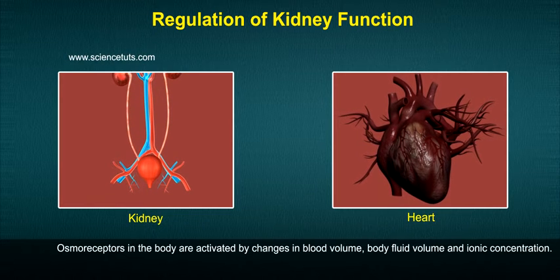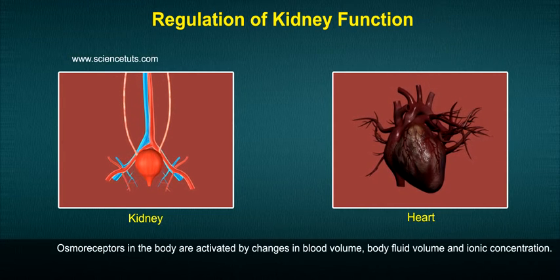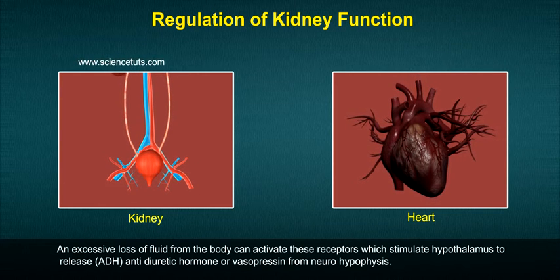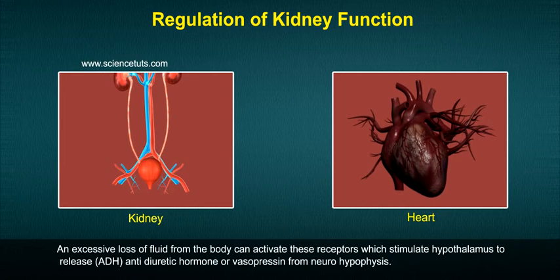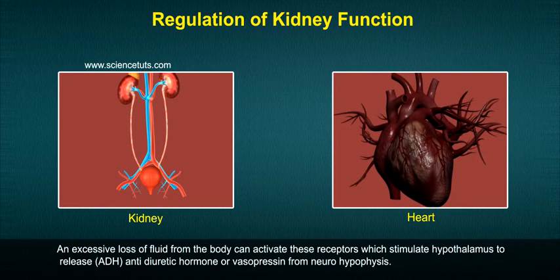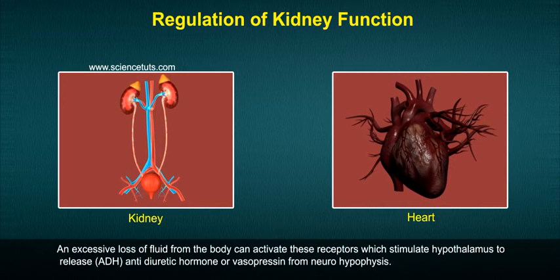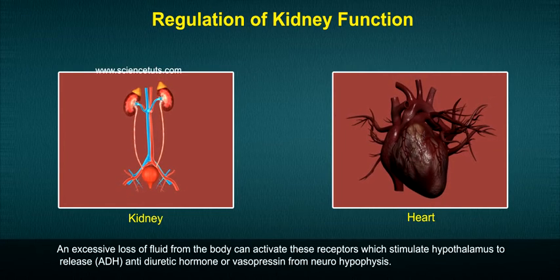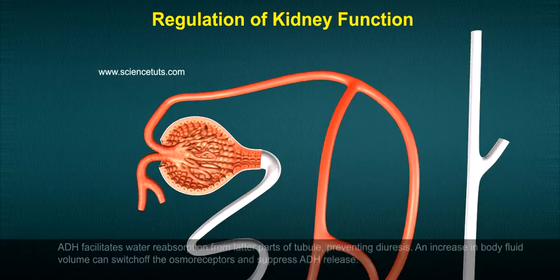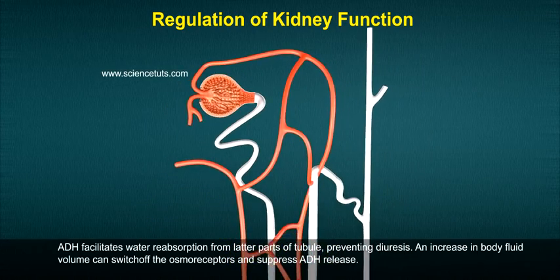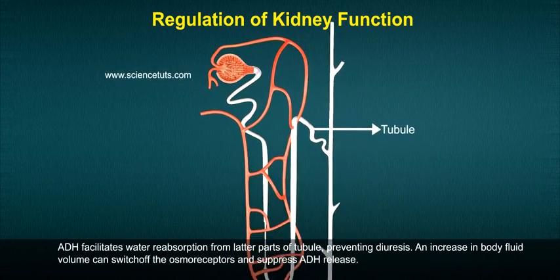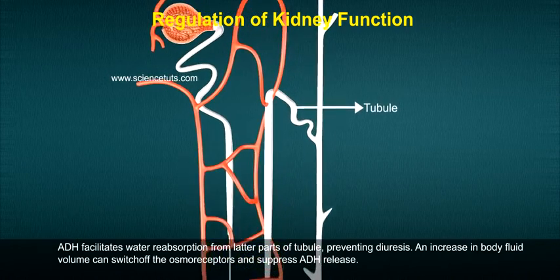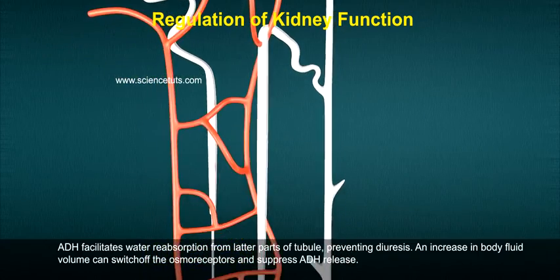Osmoreceptors in the body are activated by changes in blood volume, body fluid volume, and ionic concentration. An excessive loss of fluid from the body can activate these receptors, which stimulate the hypothalamus to release ADH — anti-diuretic hormone or vasopressin — from the neurohypophysis. ADH facilitates water reabsorption from the later parts of the tubule, preventing diuresis. An increase in body fluid volume can switch off the osmoreceptors and suppress ADH release.